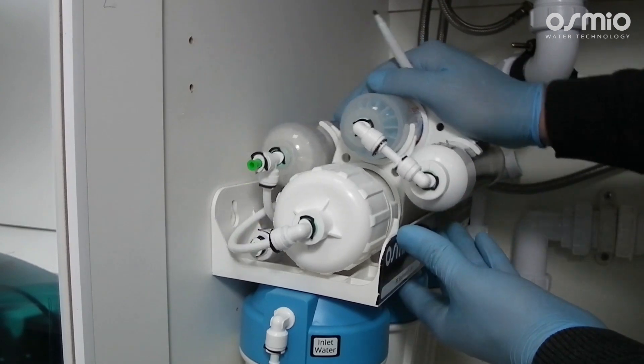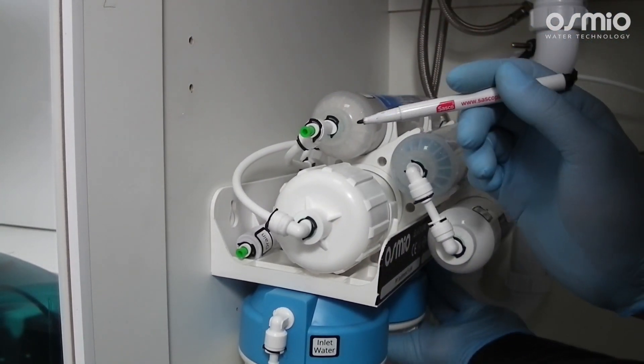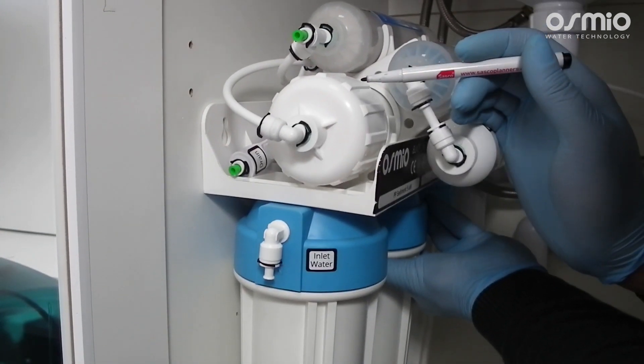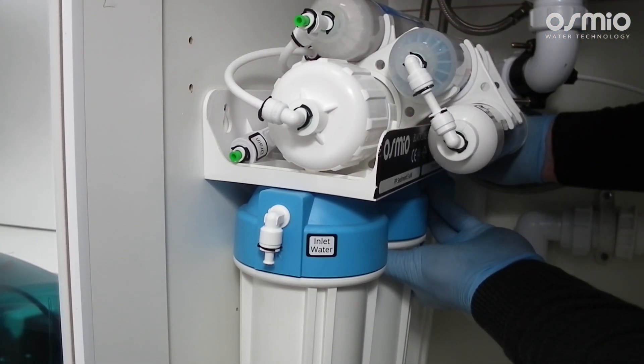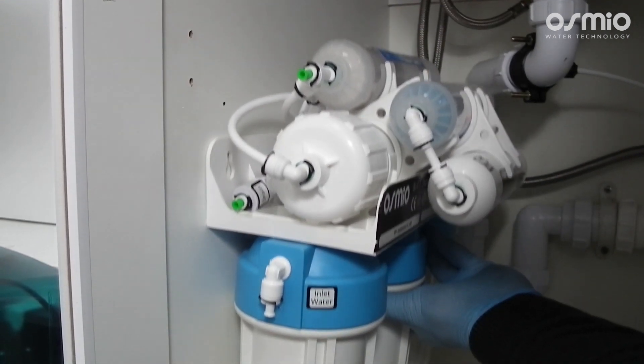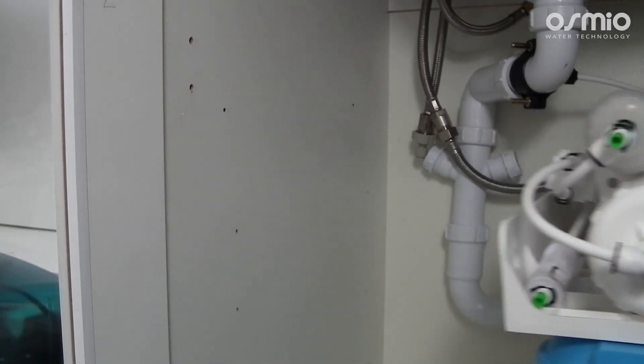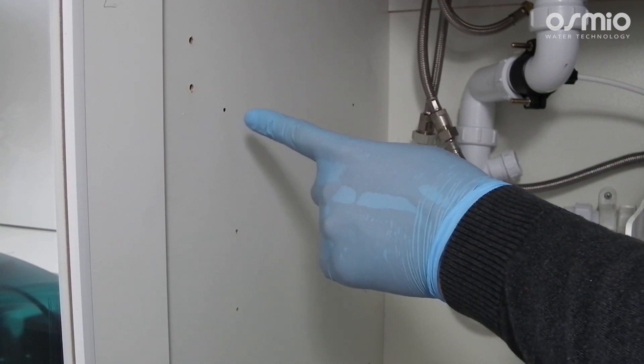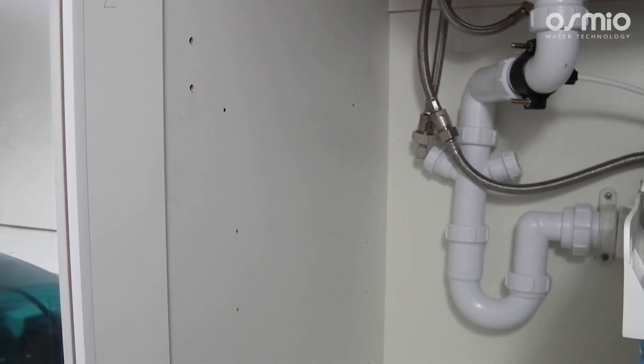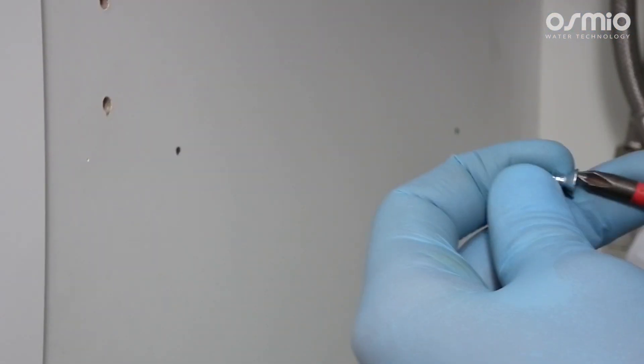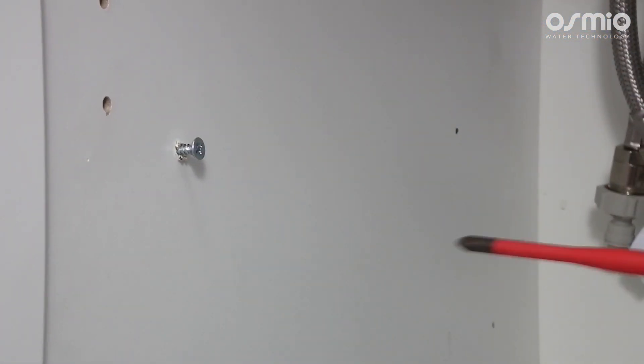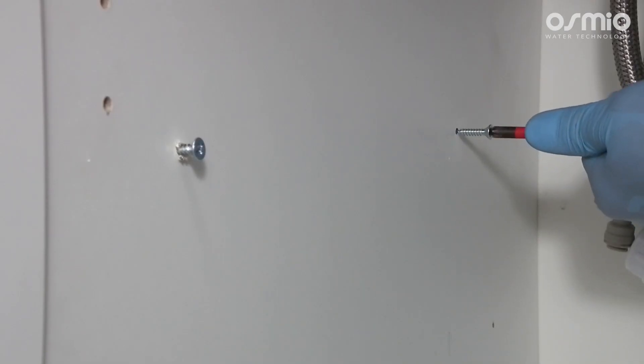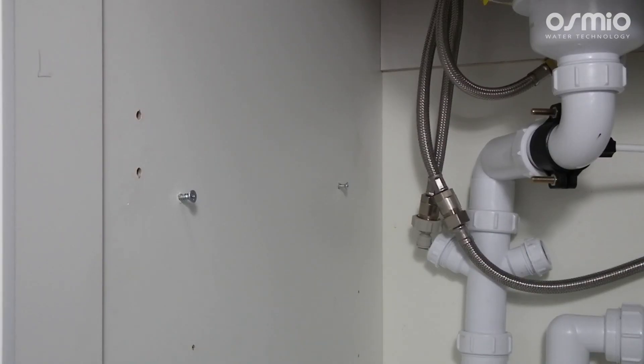Once all the filters have been fitted, we can attach the filter main body onto the wall. Have a marker pen with you, choose the correct spot and mark it. Then use the compatible screws and screwdriver depending on the wall material. Once the screws are fixed, attach the filter system to the wall.